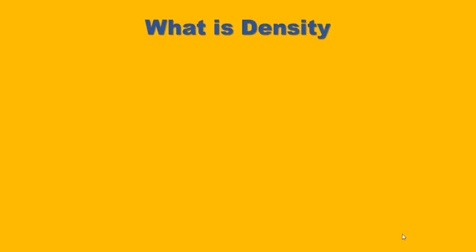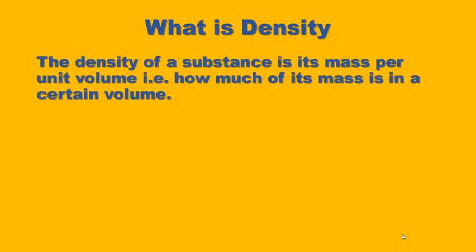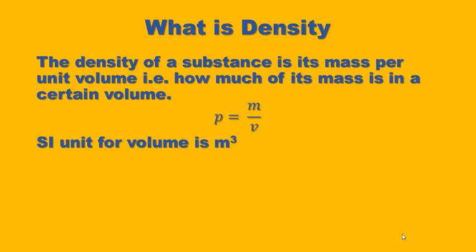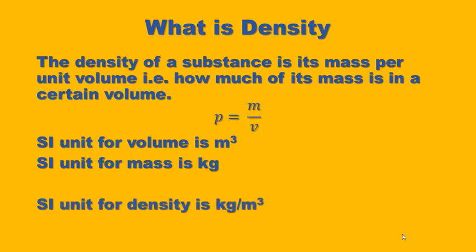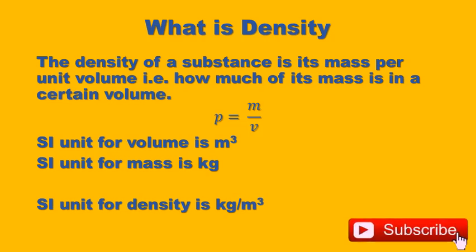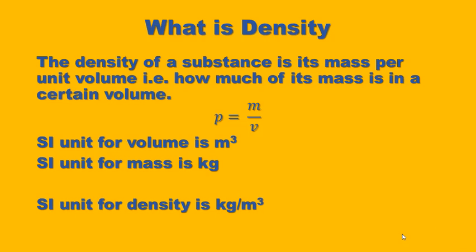The density of an object is defined as its mass per unit volume. The SI unit for volume is meters cubed, and the SI unit of mass is kilogram. Since density is mass per unit volume, our SI unit for density is kilogram per meter cubed. Basically, what we do to find density is divide the mass of an object by its volume.